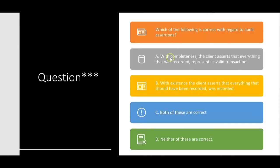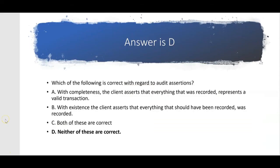Let's try this question: which of the following is correct with regard to audit assertions? A: with completeness, the client asserts that everything that was recorded represents a valid transaction — no, that sounds like existence. B: with existence, the client asserts that everything that should have been recorded was recorded — no, that sounds like completeness. C: both are correct. D: neither is correct. The answer is D — both are wrong. A describes existence, and B describes completeness, so it's all backwards. The answer is D.